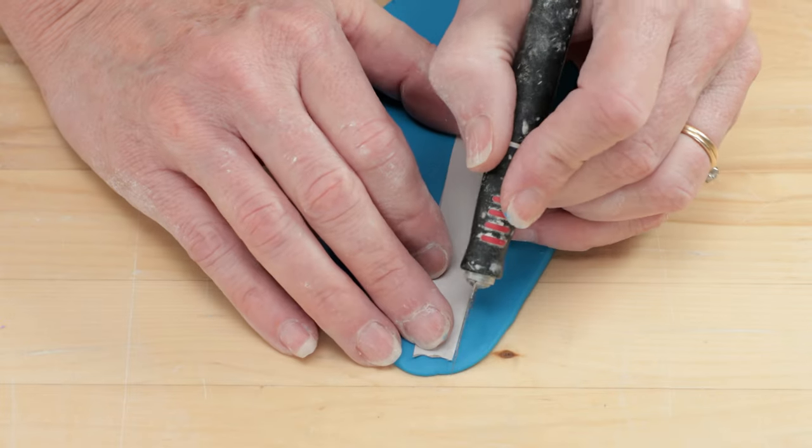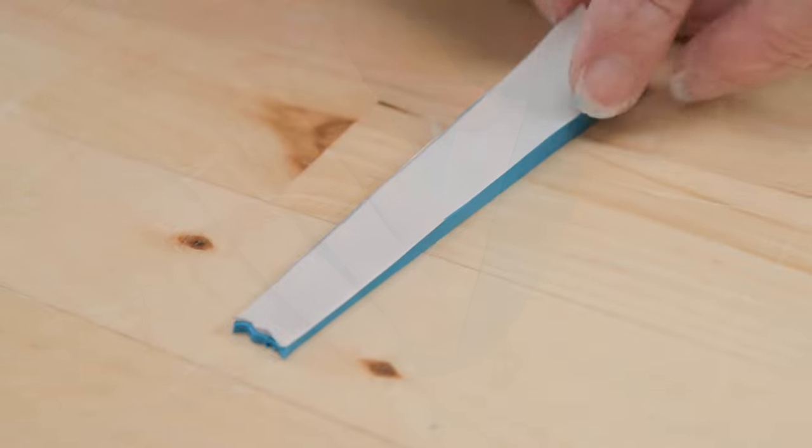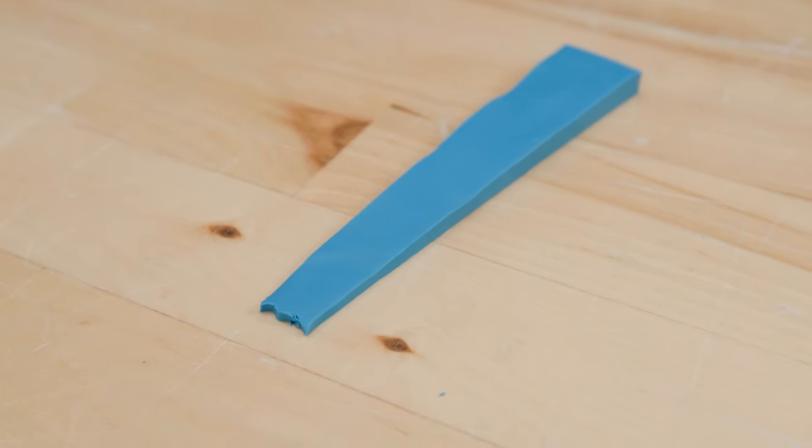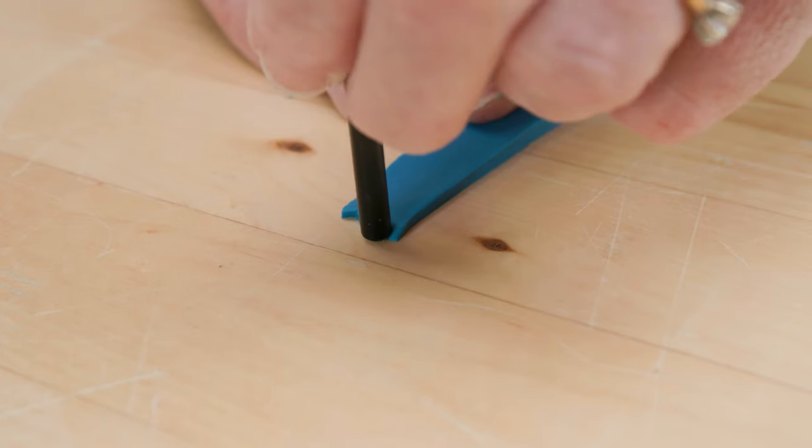Again, I used the X-Acto knife to cut it out. My edges were a bit ragged, so I used the blunt edge of the paintbrush to round it off.